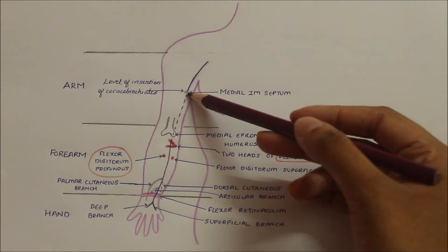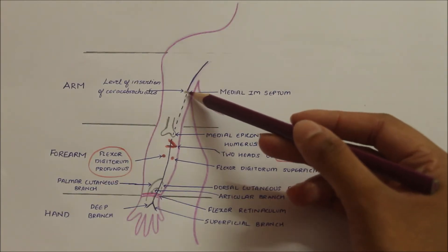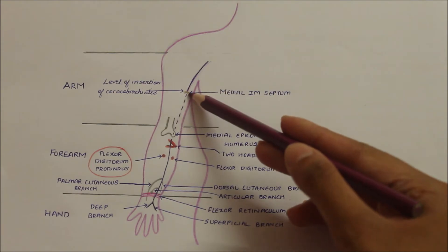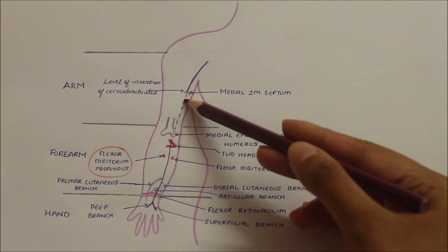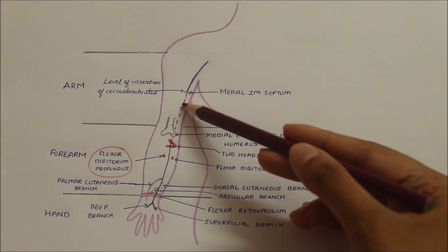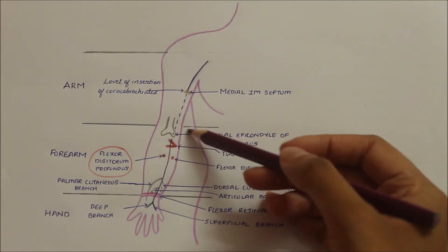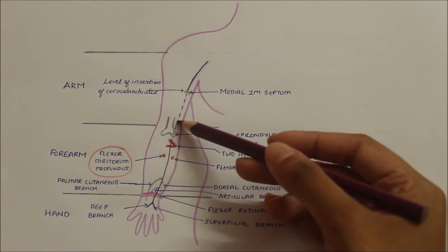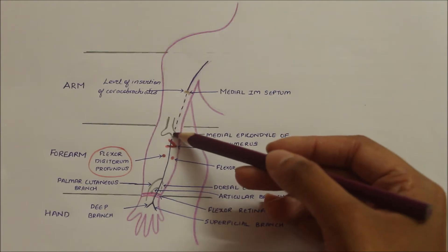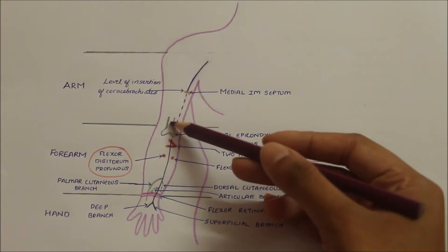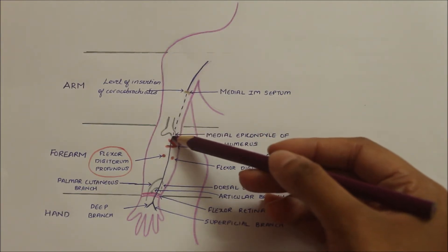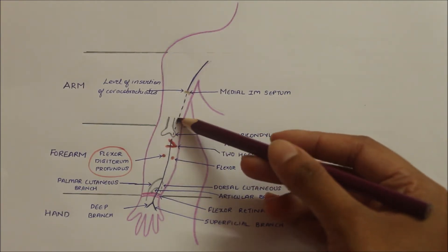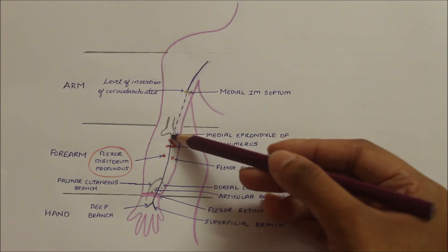Here it pierces the medial intermuscular septum, as you can see right here, and enters the posterior compartment of the arm, indicated by the dotted lines. At the level of the cubital fossa it runs behind the medial epicondyle of the humerus and can be palpated. This is the lower end of the humerus and this is the medial epicondyle — the ulnar nerve passes behind it.